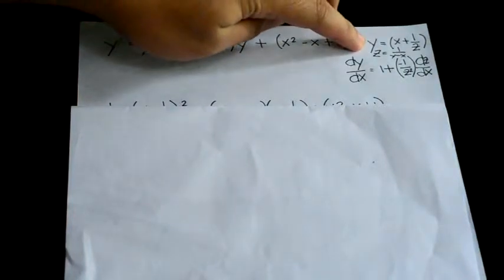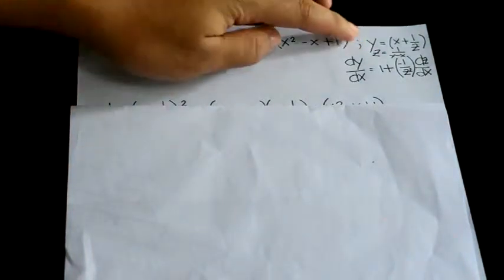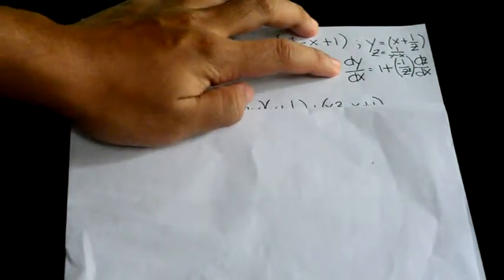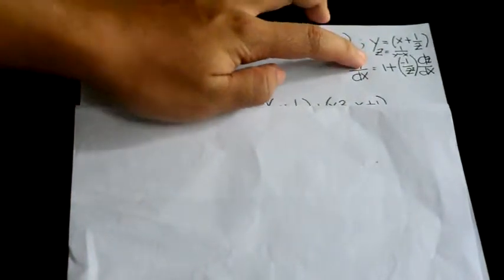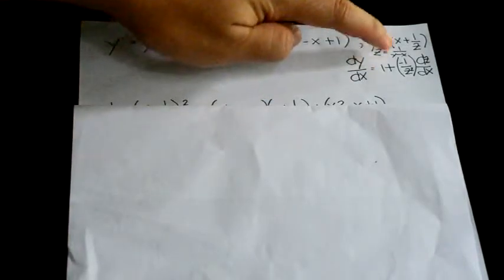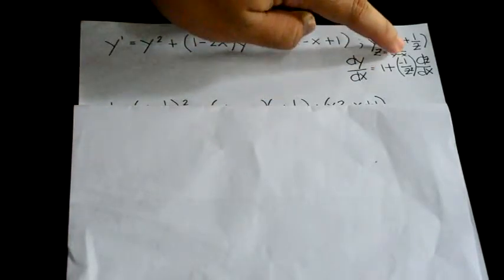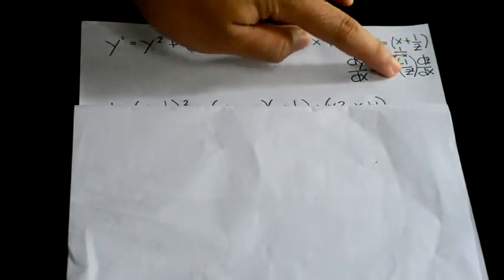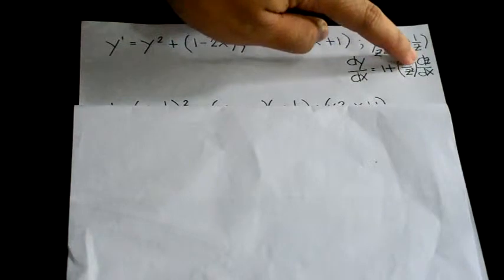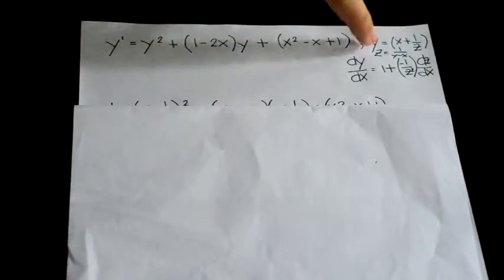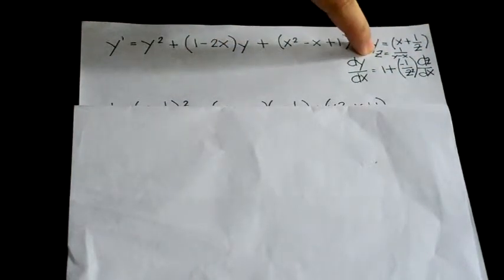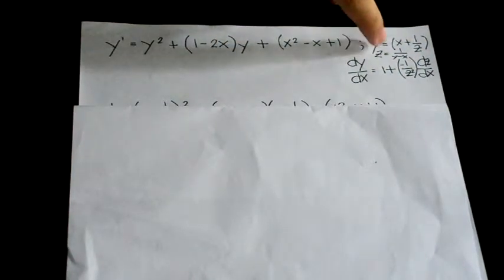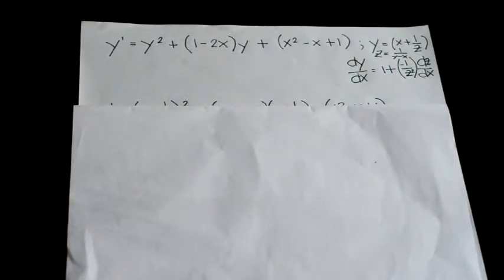We will get the derivative of y, which is dy over dx, is equal to 1 plus negative 1 over z squared times dz over dx.